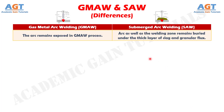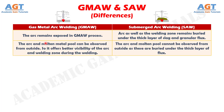Number 6: The arc remains exposed in gas metal arc welding, whereas in submerged arc welding, the arc as well as the welding zone remains buried under a thick layer of slag and granular flux. Number 7: In gas metal arc welding, the arc and molten metal pool can be observed from outside, offering better visibility during welding. Whereas in submerged arc welding, the arc and molten pool cannot be observed from outside as these are buried under the thick layer of flux.